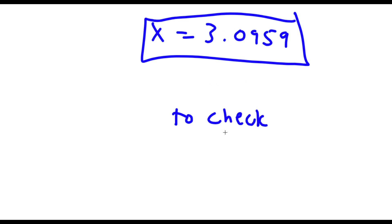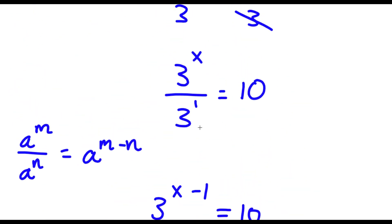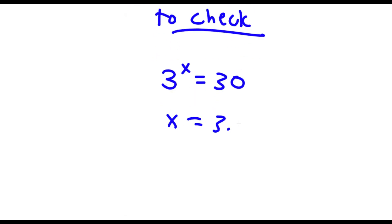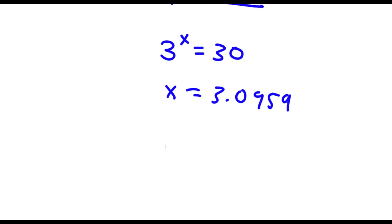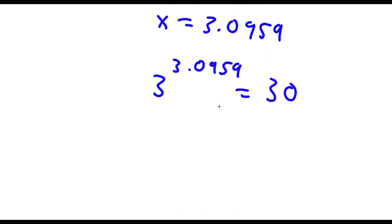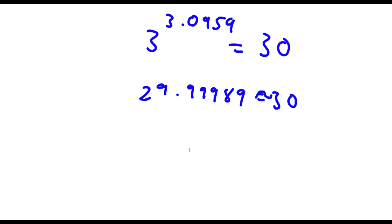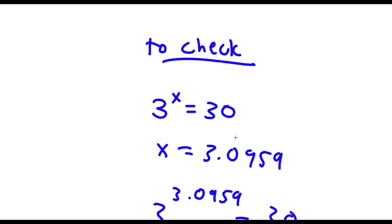Now to check: my original equation was 3 to the power of x is equal to 30. We know that x is equal to 3.0959, so if I plug this in I have 3 to the power of 3.0959 is equal to 30. Now 3 to the power of 3.0959 is equal to 29.999989, which is approximately 30. So 30 equals 30, meaning our solution is correct.